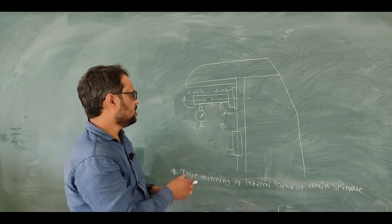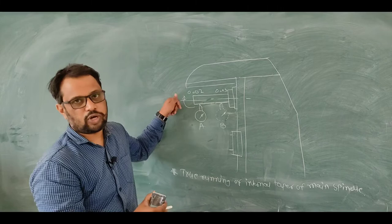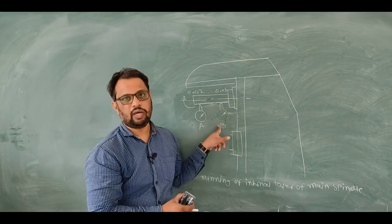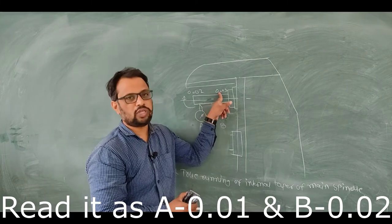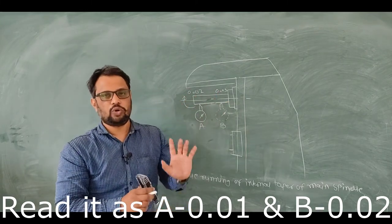Then I shift this dial indicator to position B and again rotate the mandrill and note the reading on point B. If this reading is 0.03 and at point A the reading is 0.02, then your milling machine is okay.